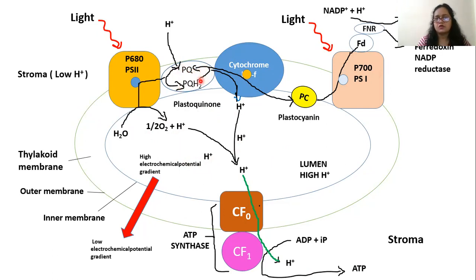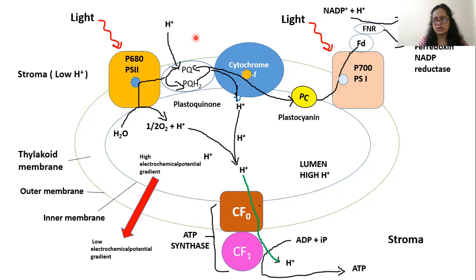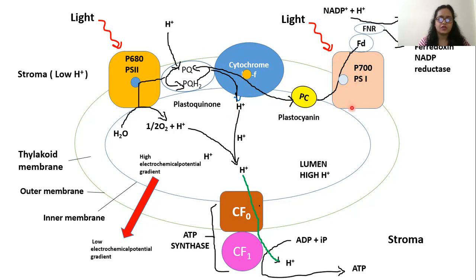Plastoquinol transfers its electron to cytochrome B6F. Cytochrome B6F accepts the electron from plastoquinol and transports the proton — which was accepted from the stroma — into the lumen of the thylakoid, then transfers the electron to the next electron carrier, plastocyanin. Plastocyanin then transfers electrons to P700 of photosystem one. P700 also gets excited by light and releases an electron.